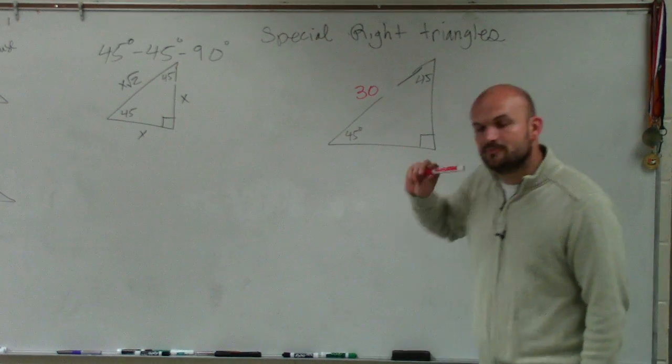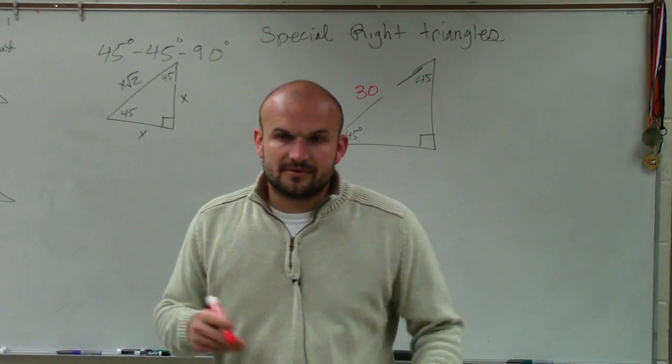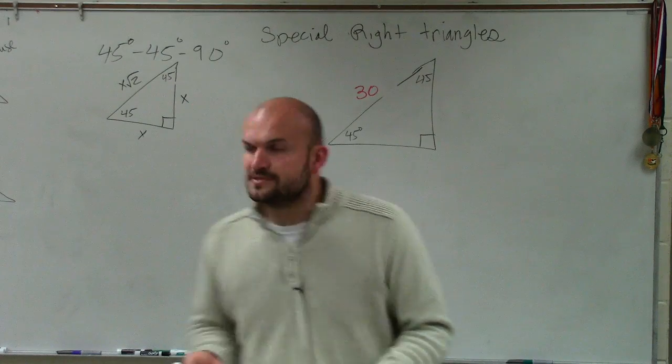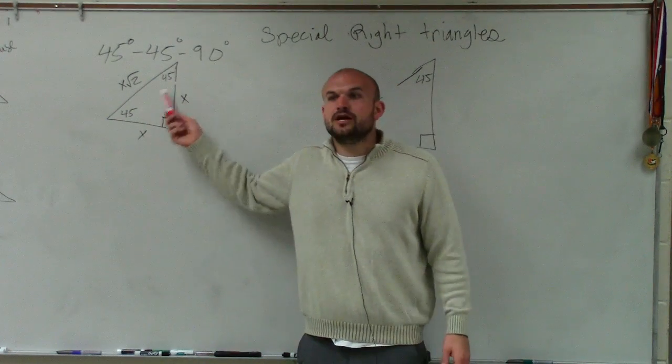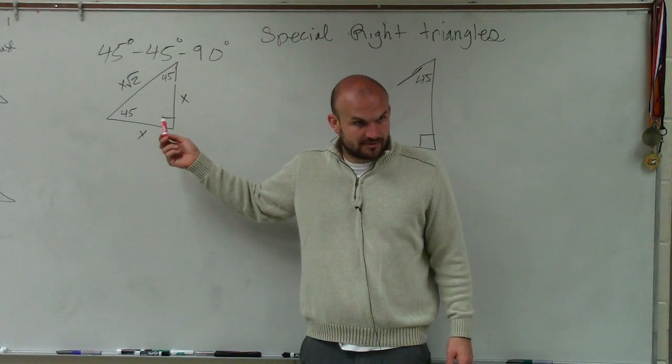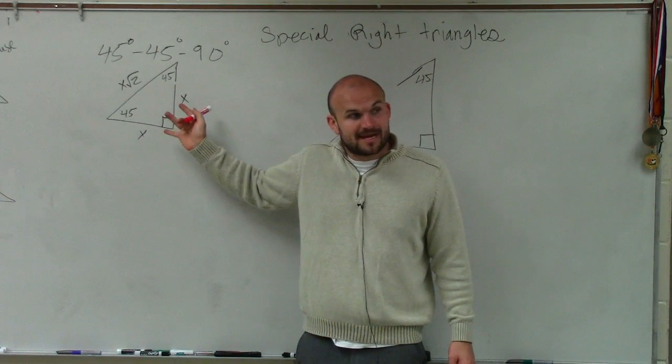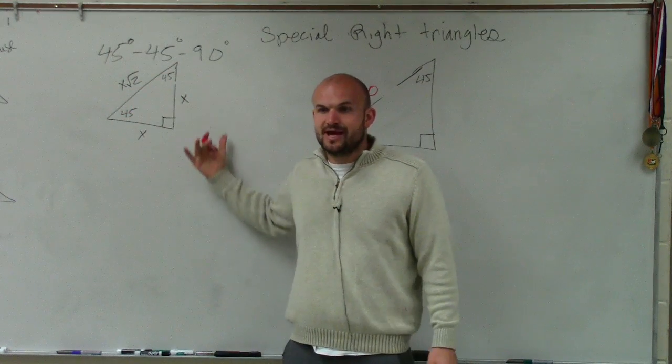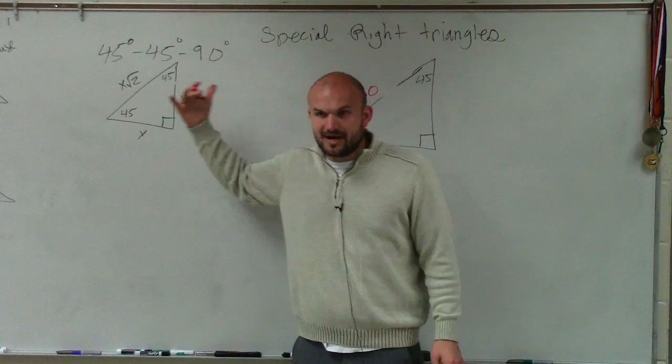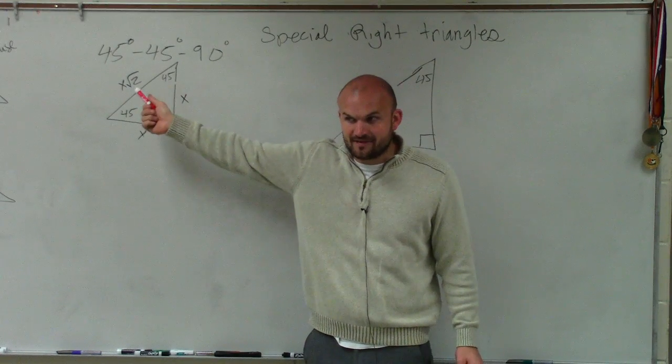So what I'd like to be able to do for this one is when we're looking at our special right triangles, once we knew a leg, we knew the other leg was exactly the same, right? Once we knew the two legs were the same and we wanted to find the hypotenuse, we had to do what? We had to multiply, right, by what value?